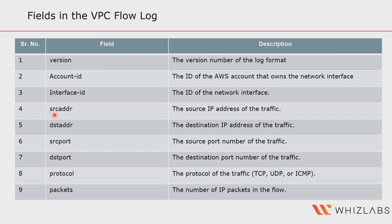Then we have source address — the source IPv4 or IPv6 address — which is the address from where the request originated, followed by the destination address, which is the destination IPv4 or IPv6 address where the traffic is destined. Note that these IP addresses always reflect the private IPv4 address of the EC2 instance or whatever network interface is being used. Next we have source port, destination port, and then protocol, which is the IANA protocol number of the traffic.